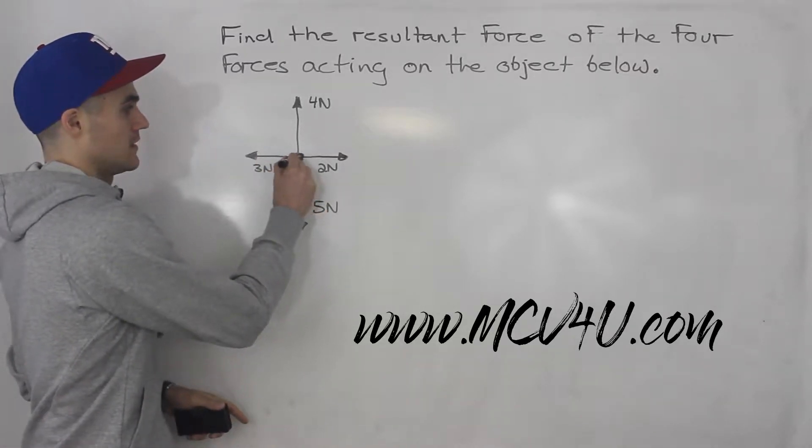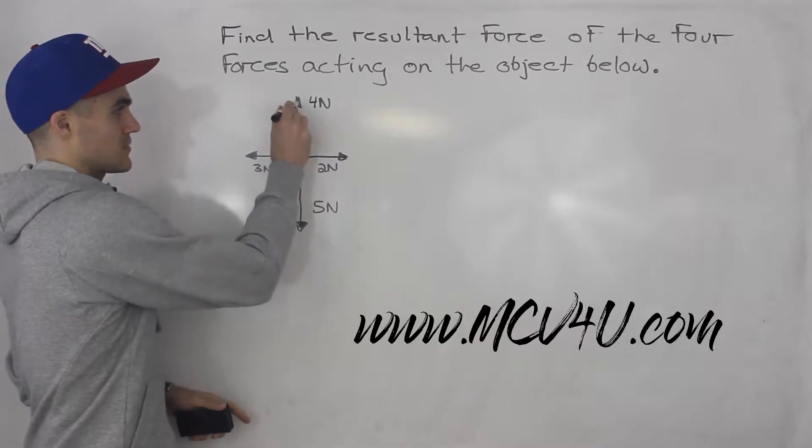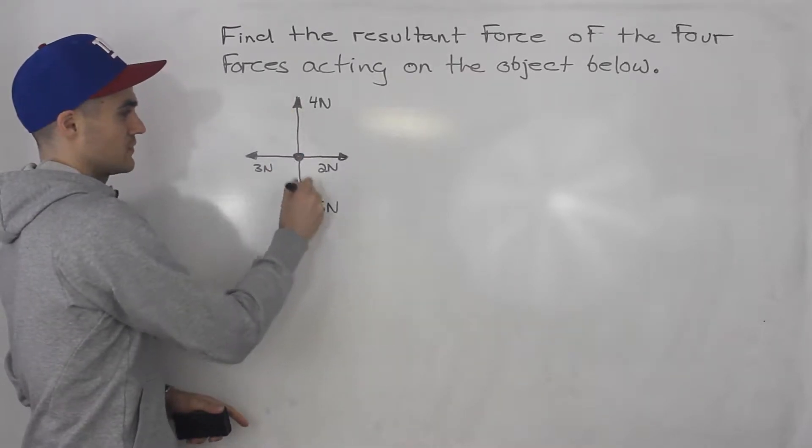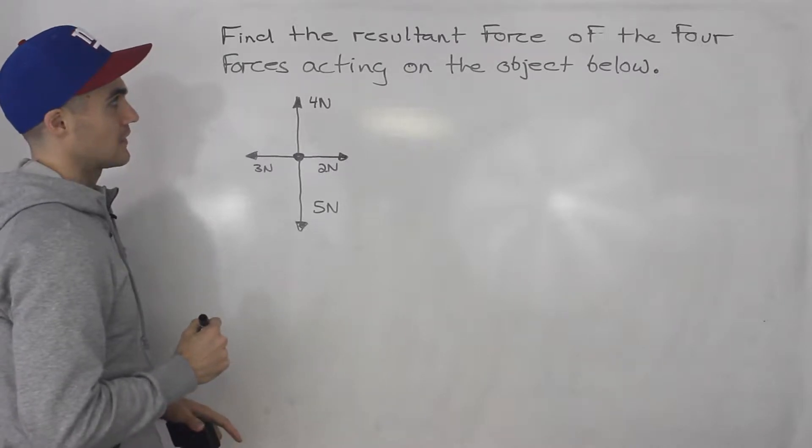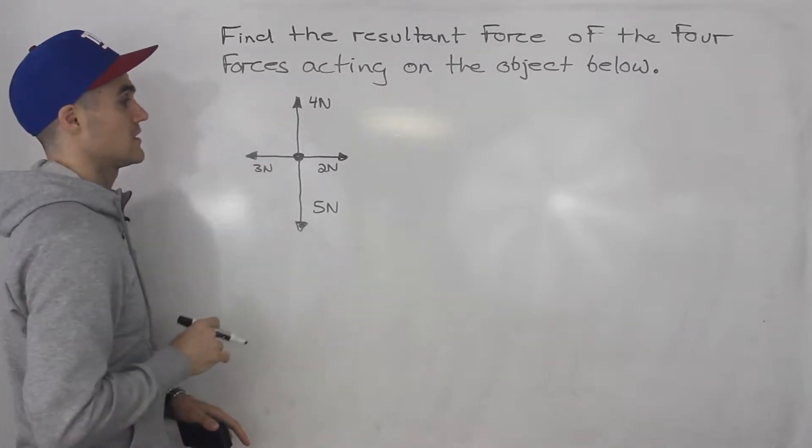So this object right here is in the middle. We've got a force acting this way at four newtons, this way at five newtons, two newtons, three newtons. So how are we going to find the resultant force of all four of these?